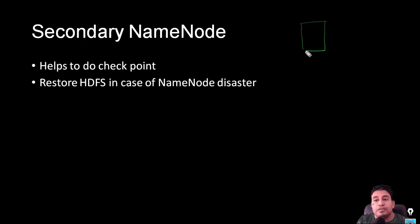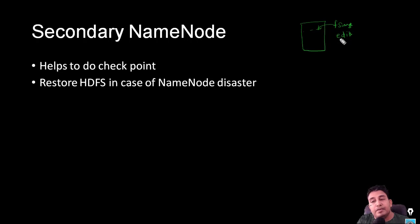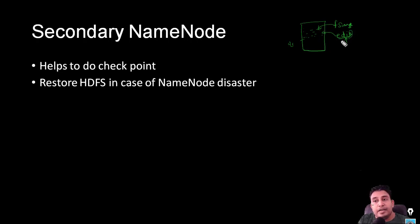So this is the name node. Initially we will have a file called fs image — this is the persistent image — and an edit file. When it starts, the fs image will be loaded into memory and whatever contents are inside the edit file will be applied, giving us a namespace. After that, whatever updates happen in the namespace will be added to the edit file.